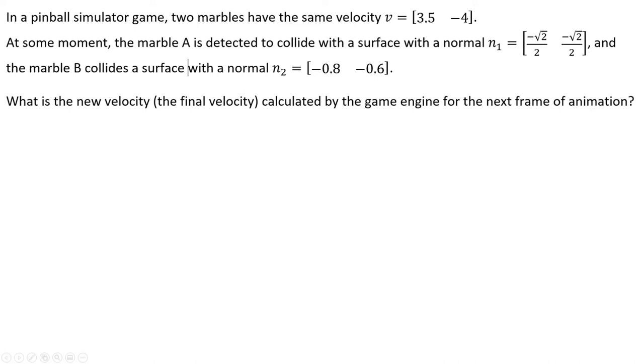And the marble B collides a surface with a normal negative 0.8, negative 0.6. The question is, what is the new velocity calculated by the game engine for the next frame of animation?